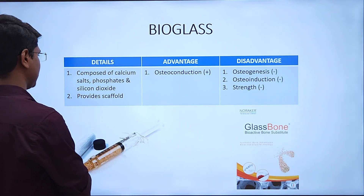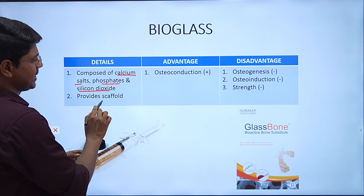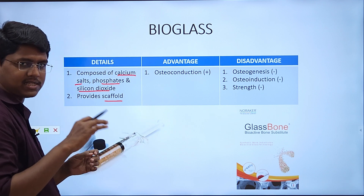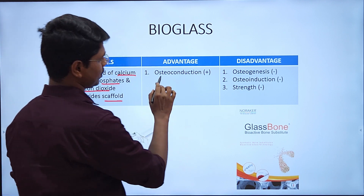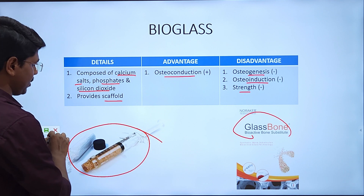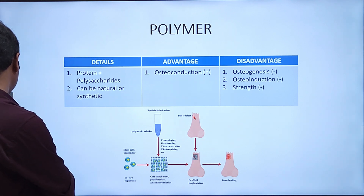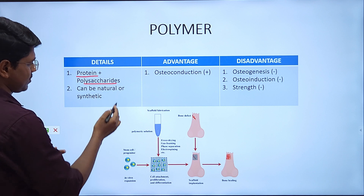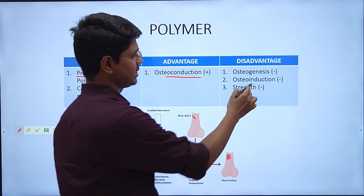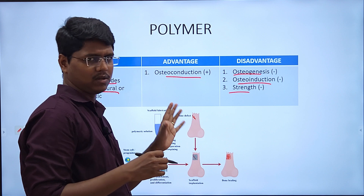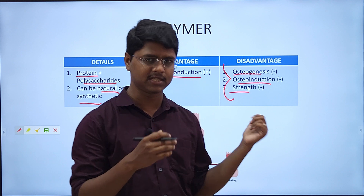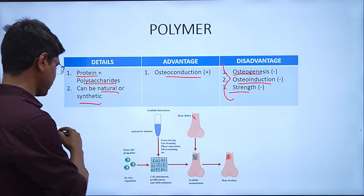Next is bioglass — similar to ceramics — composed of calcium salts, phosphates, and silicon dioxide; it provides scaffold. Then there is polymer, composed of proteins and polysaccharides, which can be natural or synthetic. All three — ceramics, bioglass, and polymer — are synthetic bone substitutes that provide a scaffold, so they have osteoconduction property but no osteogenesis, no osteoinduction. They are commercially available and can be combined with other grafts to increase osteogenesis if doing research.